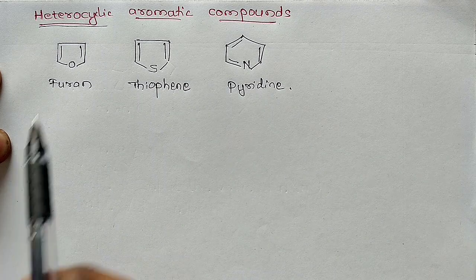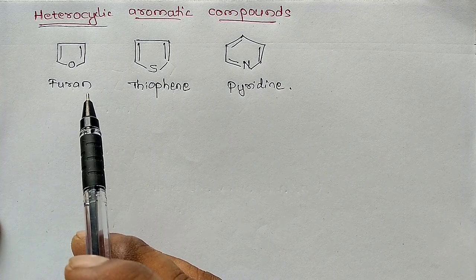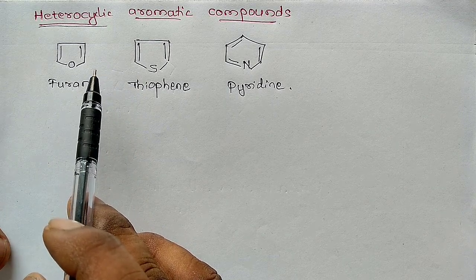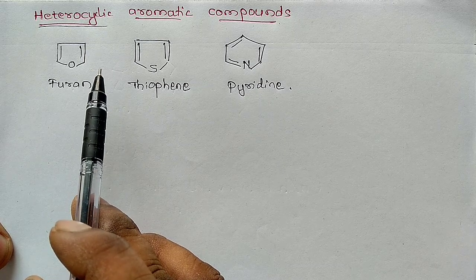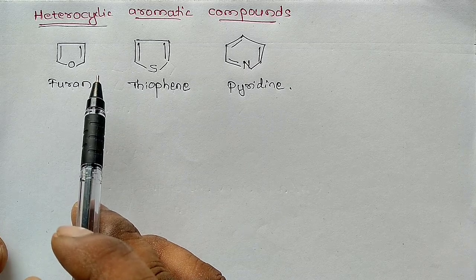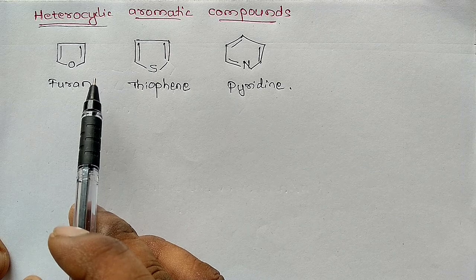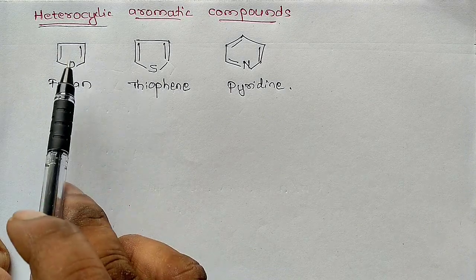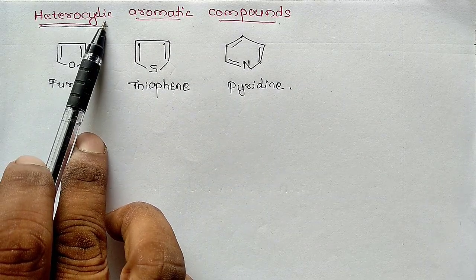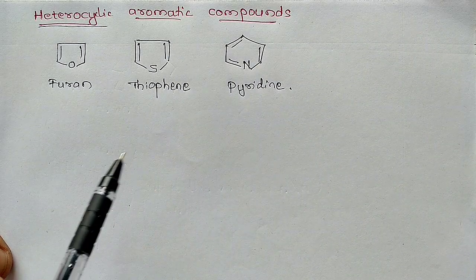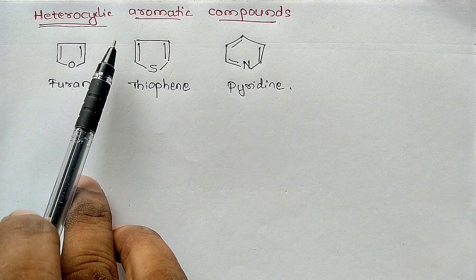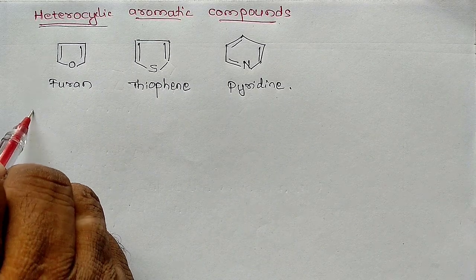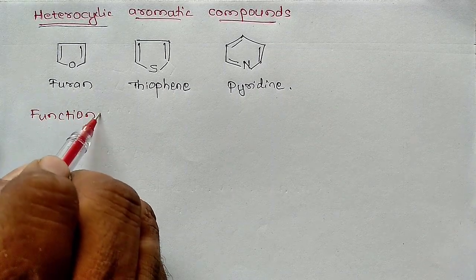Next, organic compounds can also be classified on the basis of functional groups into families or homologous series. We will discuss the classification on the basis of functional groups into families or homologous series. Now let us discuss what is a functional group — this is also a very important concept.